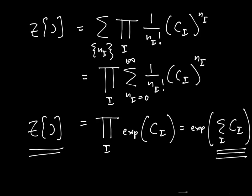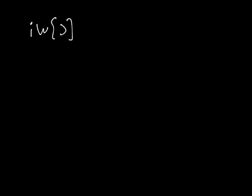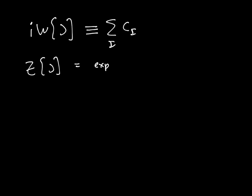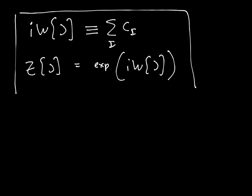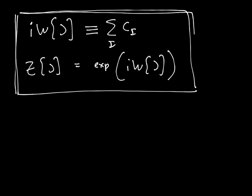Z[J] is the exponential of the sum over only connected diagrams. This sum over connected diagrams occurs quite often, so we define W[J] — also written as i times W[J] — to be the sum over i of C_i, the sum over all connected diagrams. Then Z[J] equals the exponential of iW[J], so W is just the logarithm of the generating functional up to a factor. That concludes today's lecture; next time we'll use this technology to actually calculate something.